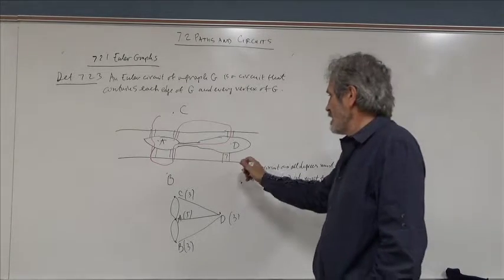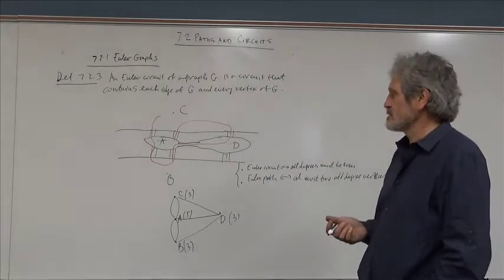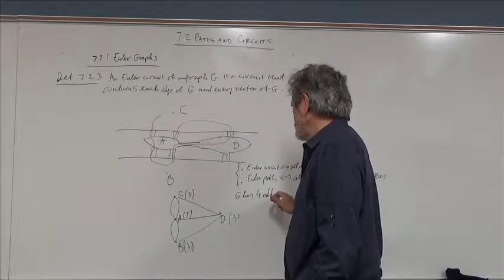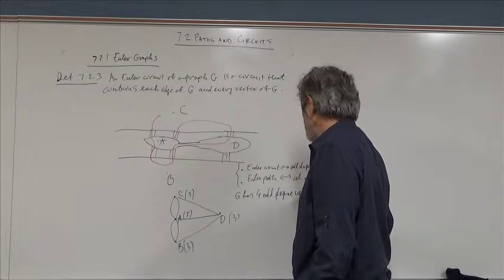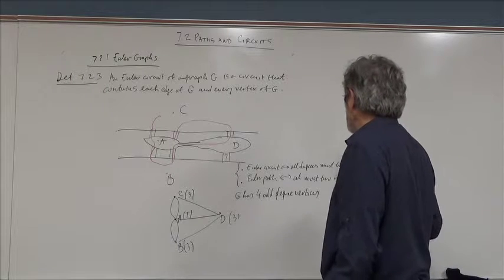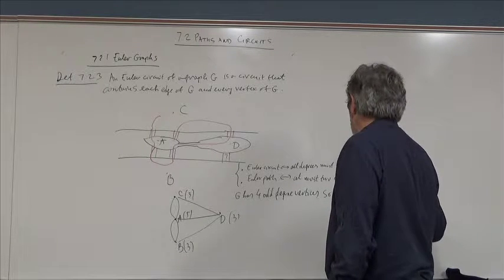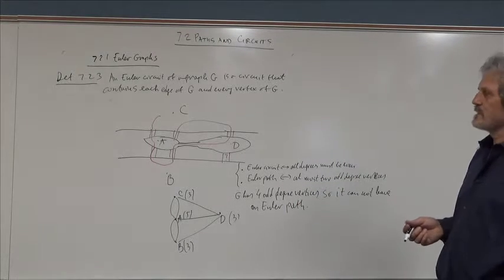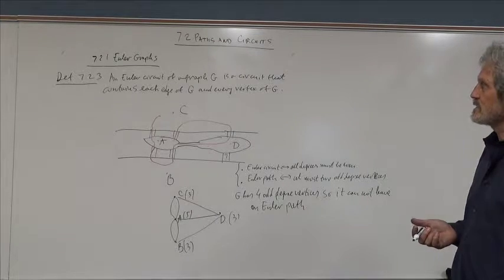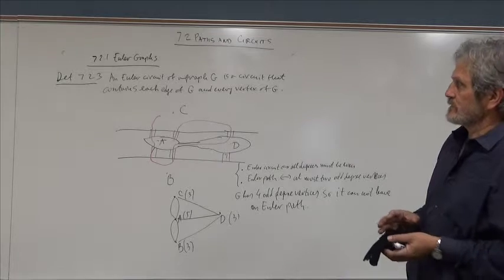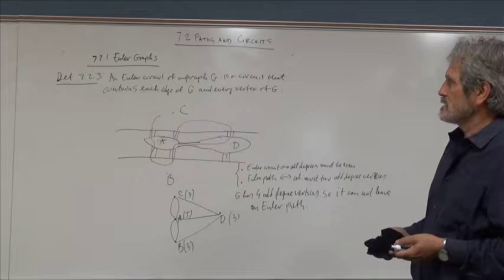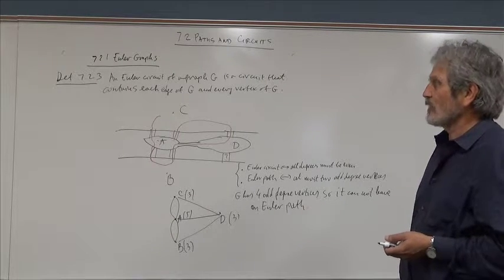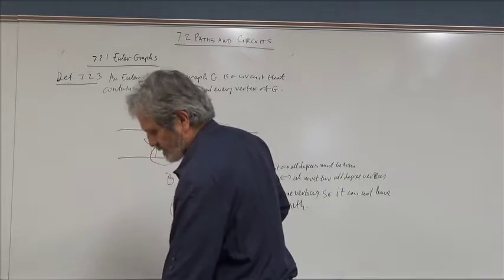This graph G has four odd-degree vertices, so it cannot have an Euler path. That resolves the famous Königsberg problem. We now want to show why these conditions are both necessary and sufficient — the necessary direction is obvious, but sufficiency is less obvious.